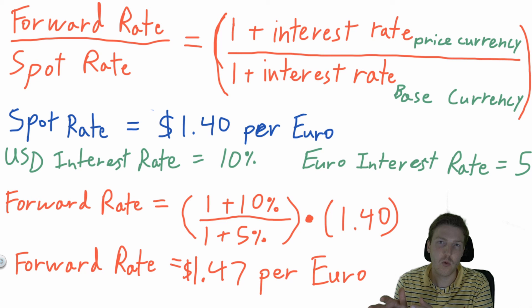And that's why we started off with $1.40 US dollar per euro. But in a year from now, we would have to trade $1.47 to get one euro. And that is the parity.